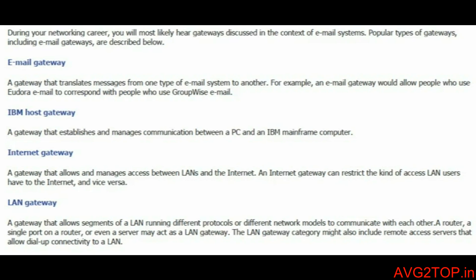The IBM host gateway is especially used for communication between a normal desktop or client computer and an IBM mainframe computer. The mainframe computer contains lots of logical coding information where data is not in a graphical user interface — it is maintained through coding and server-type processing. Communication between PCs and IBM mainframes is made possible through this gateway.